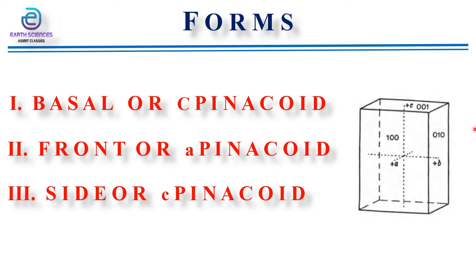The third type is the side pinacoid, also known as the b pinacoid. This pinacoid has two faces parallel to the vertical axis and to the a axis. It is called the side or brachy pinacoid since it cuts the b axis. Its faces have symbols (010) and (01̄0). This form was formerly called the brachy pinacoid. All pinacoids are adequately indicated by Miller symbols.